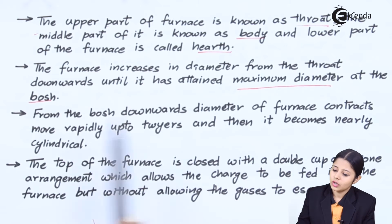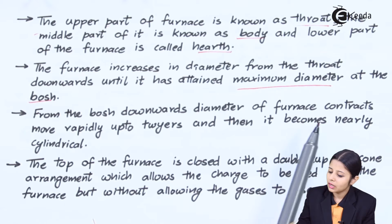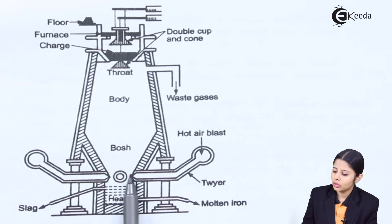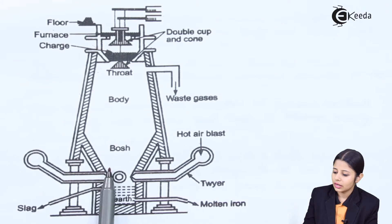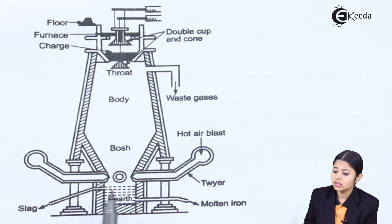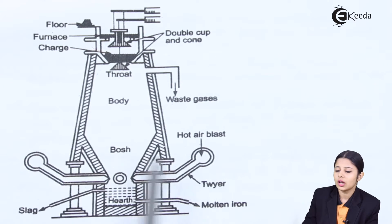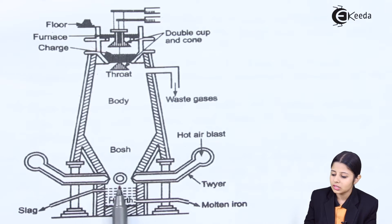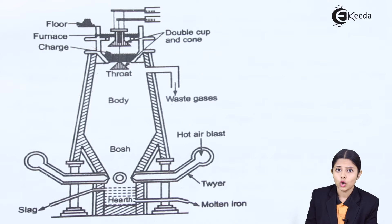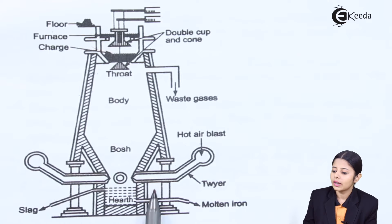From the Bosch downward, the diameter of the furnace contracts more rapidly up to the tuyeres and then becomes nearly cylindrical. After the Bosch, we have the tuyeres, and then the hearth, which is small again. The hearth is small because it is important to remove slag and molten iron separately. If it were equally large, there would be a high chance of slag mixing with the molten iron. So molten iron is removed from one outlet and slag from another, with no further reactions between them.